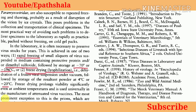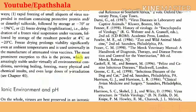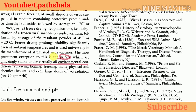The most prominent exception to this is the prions, which are amazingly stable under virtually all environmental conditions, surviving boiling, freezing, and many physical and chemical insults, and even large doses of gamma radiation.